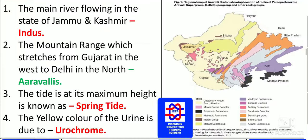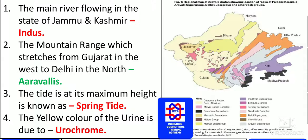The main river flowing in the state of Jammu and Kashmir is the Indus. The prominent river in Jammu and Kashmir is the Indus.